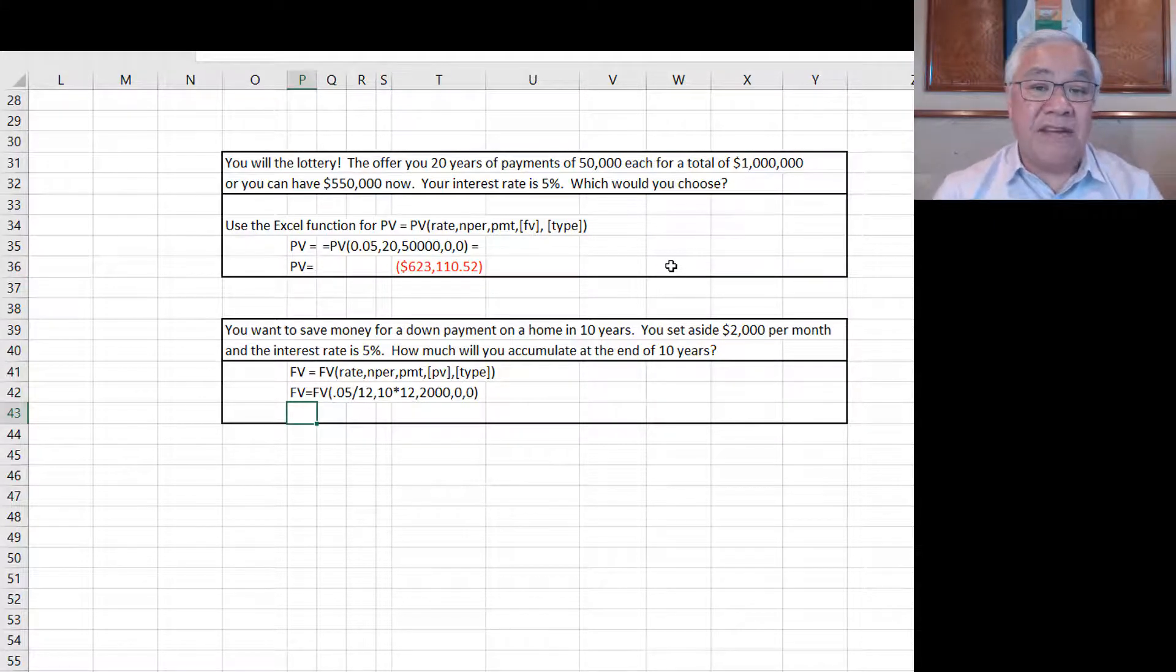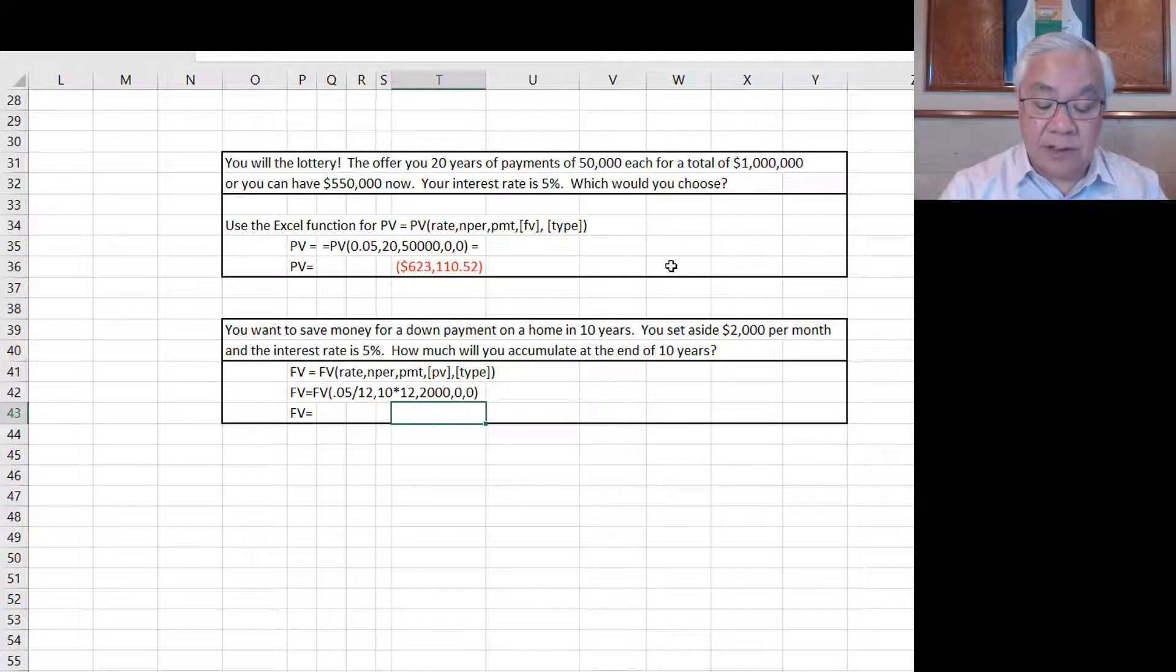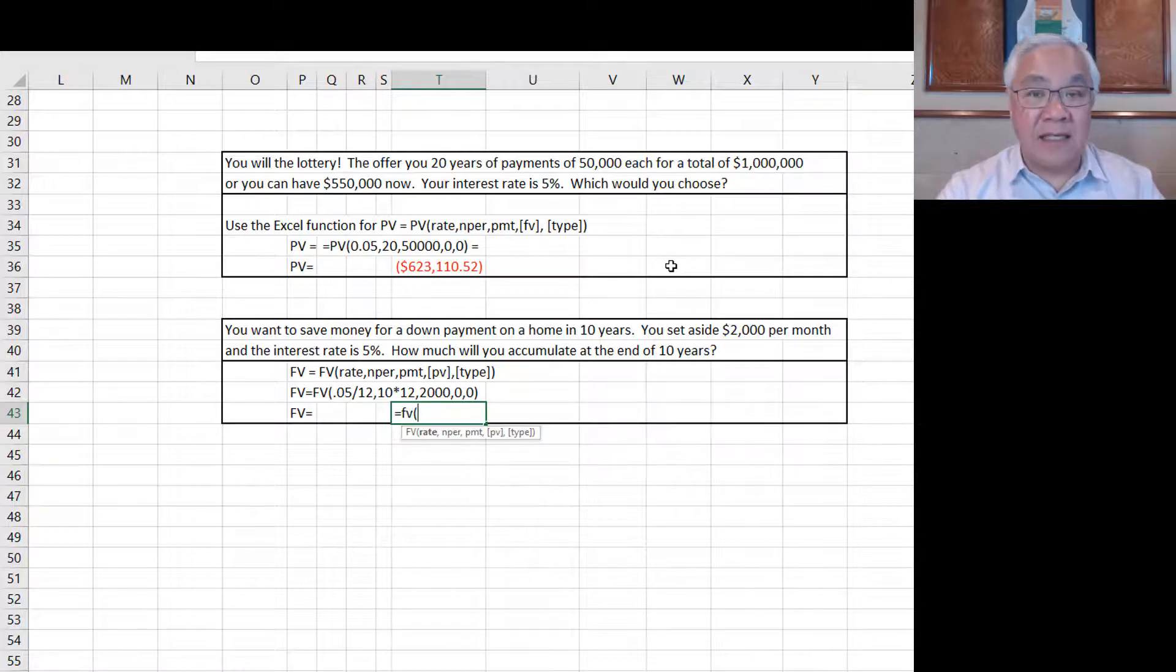The second scenario is you want to save money for a down payment on a house. So here we have the data is the amount is $2,000 per month. The interest rate is 5% per year. So we have to be careful there. And how much would we accumulate at the end of the period? So that is a future value calculation. Future value equals, and the formula we'll just do here, equals FV open parens. Again, let's follow the prompts. And we have to be a little careful. And I'll show you why. The rate is 0.05, but that's an annual rate. To get a monthly rate to correspond with our monthly savings, you divide by 12. So remember that little adjustment. It's a common mistake.